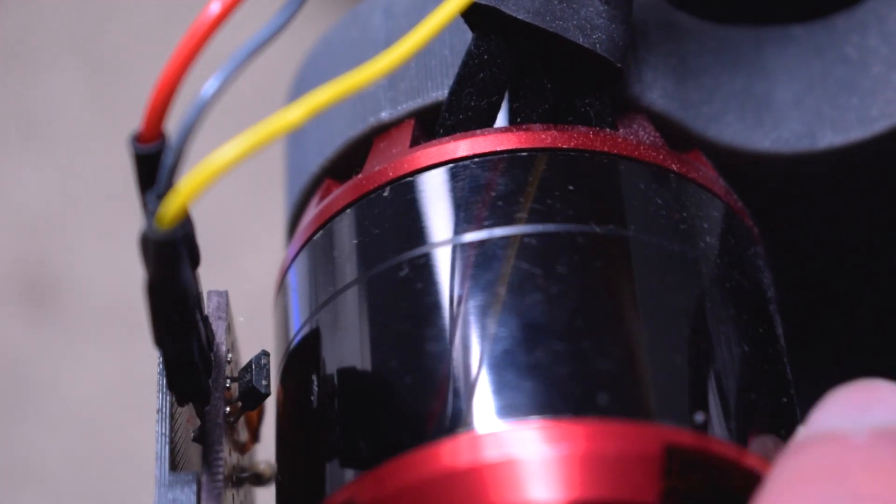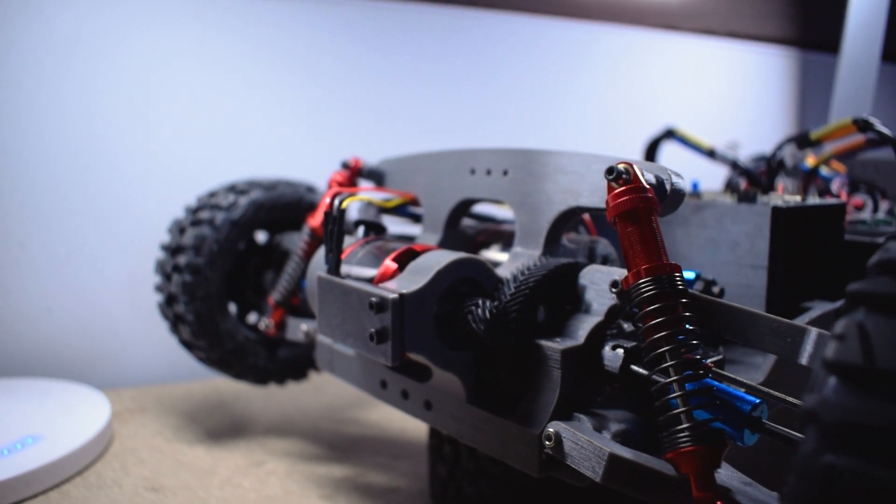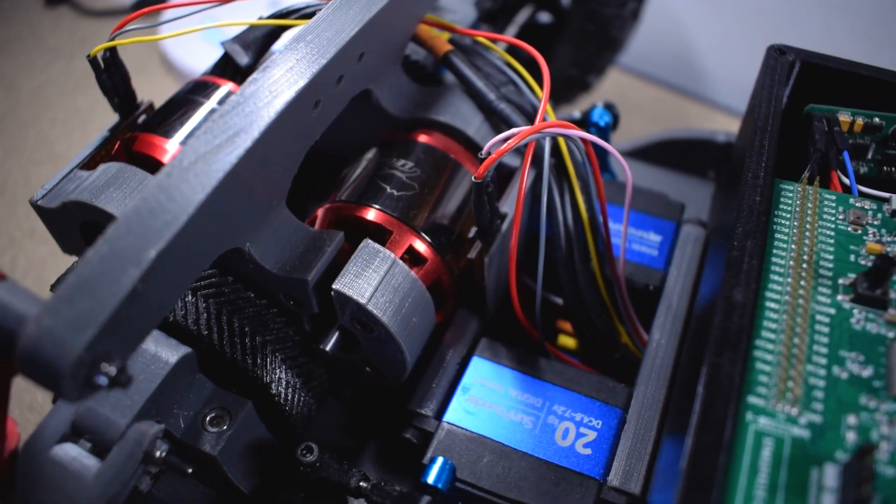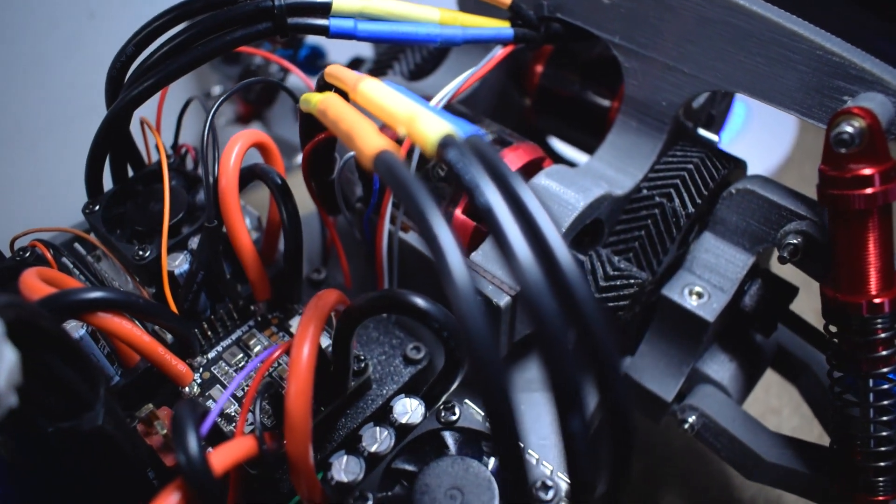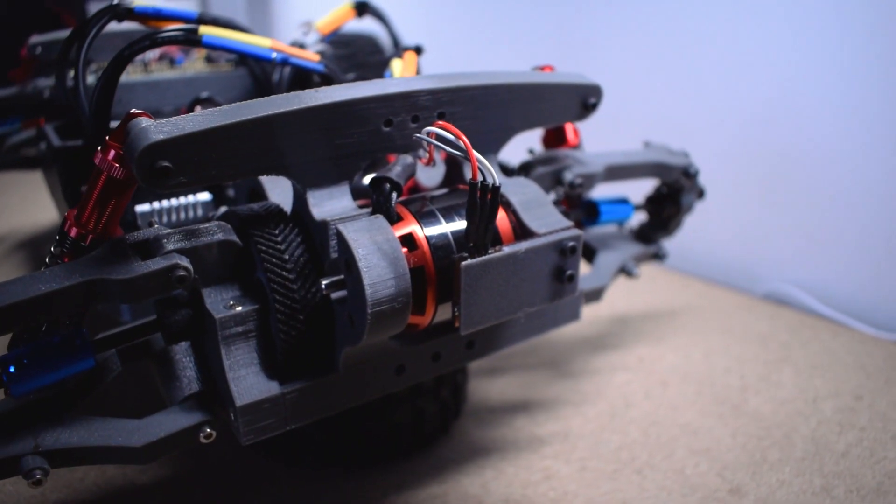The sensors detect changes in magnetic fields and as the motor is spinning around the magnets pass over the sensor and you can effectively calculate the speed that the motor is rotating. This creates a valuable feedback loop so that I can control the speed of each wheel at any given moment.